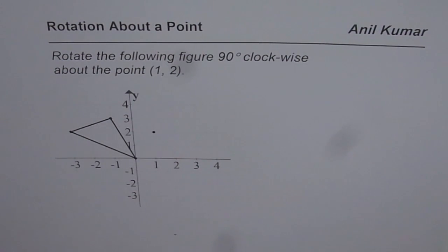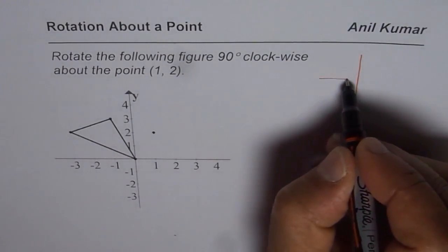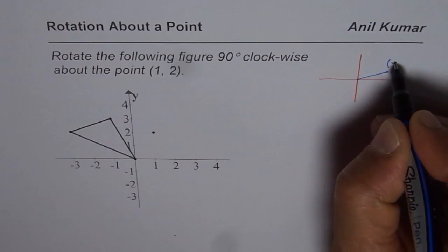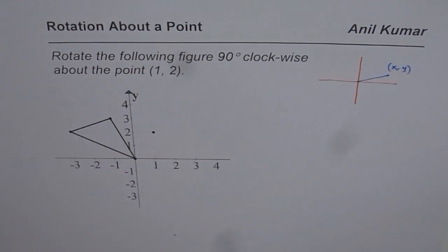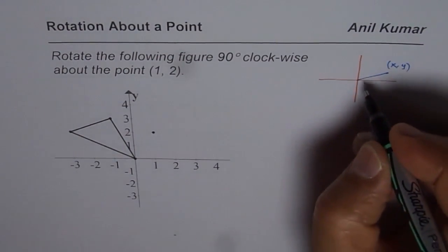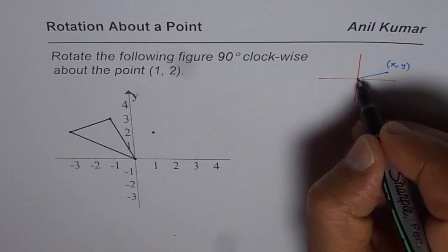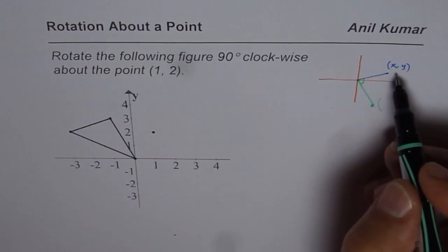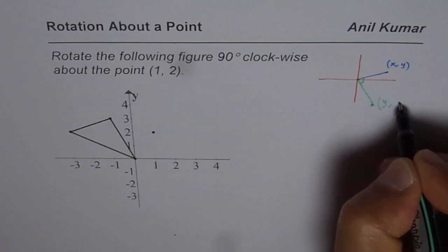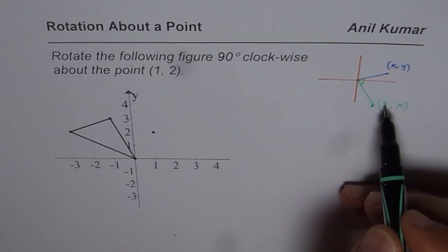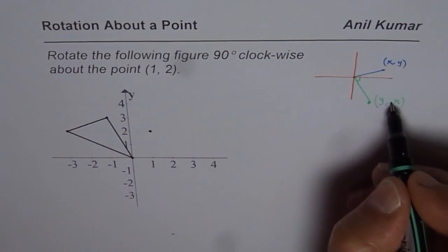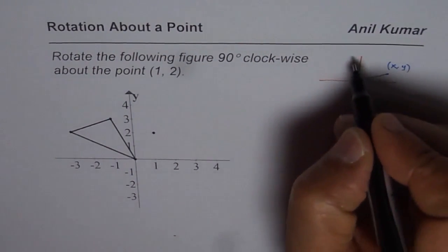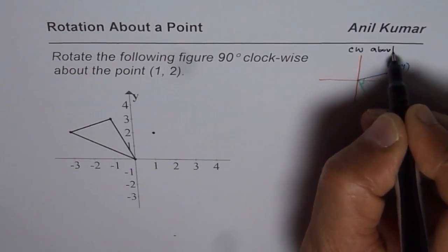Now let's first figure out what really happens when you rotate clockwise. If I have an object with coordinates (X, Y) and I rotate it clockwise 90 degrees about the origin, what really happens is that the X and Y coordinates flip. We get (Y, X) and you can see that the Y values become negative. So the result is (Y, -X). That is rotation clockwise about the origin.